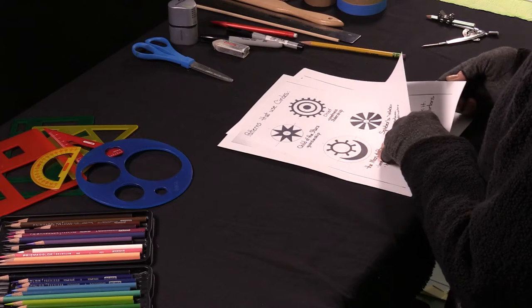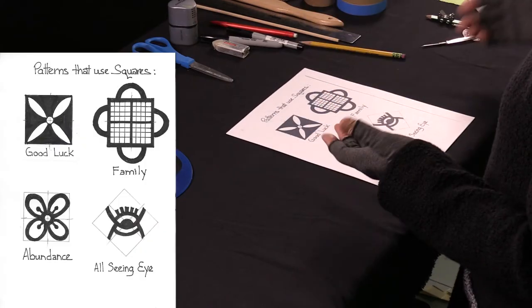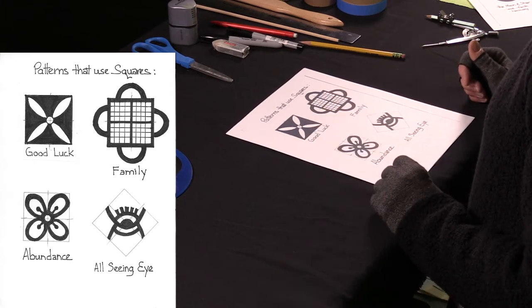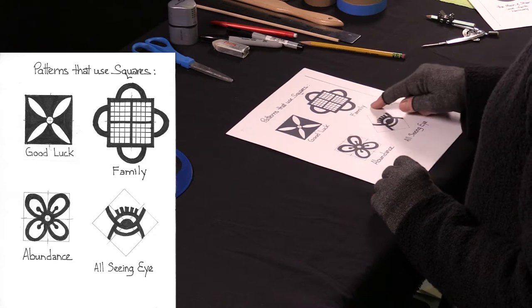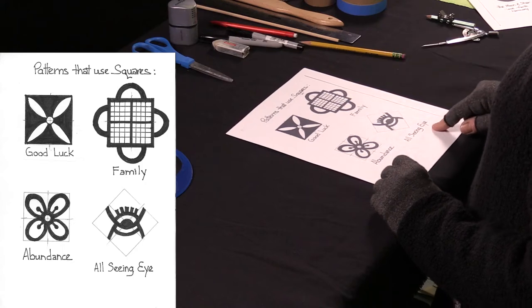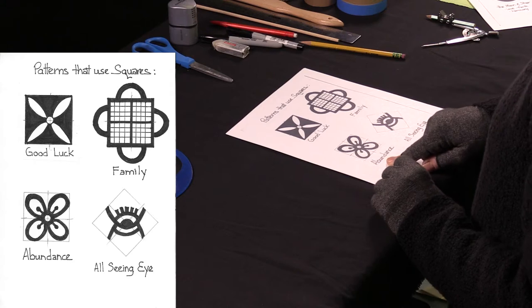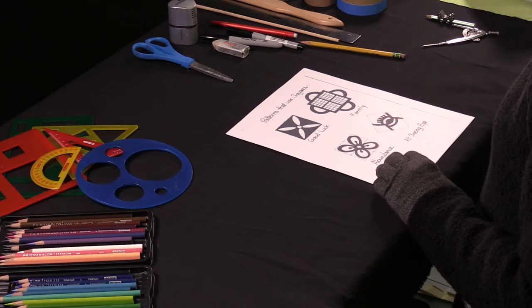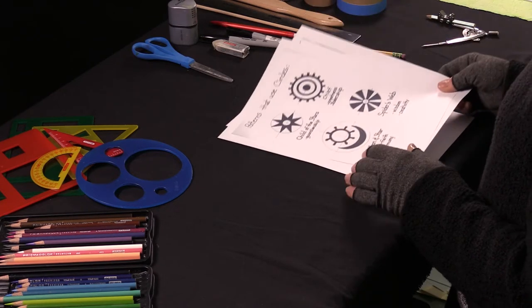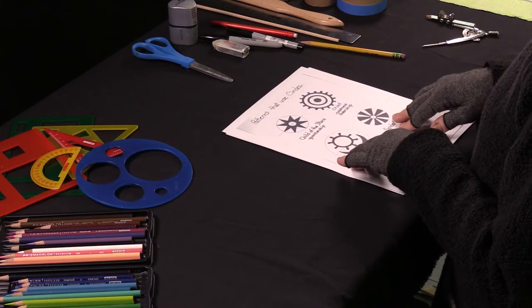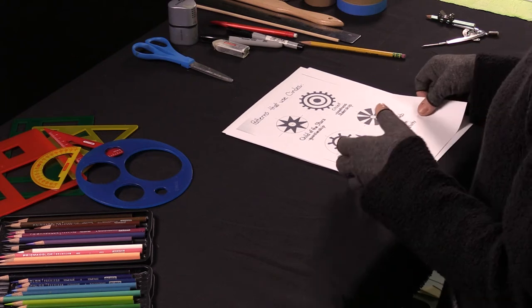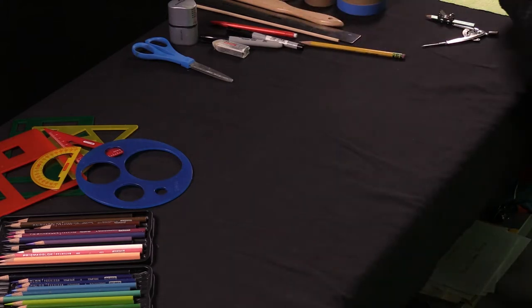I want to show you the squares. Here's some designs that we use a square to help us draw. We have a good luck symbol, a family symbol. That looks a little complicated, but it isn't. We have the all-seeing eye, and we have one that says abundance. It kind of looks like a flower. I'm going to show you how to start a circle symbol and how to start a square symbol. So get out your tools, and we'll begin.